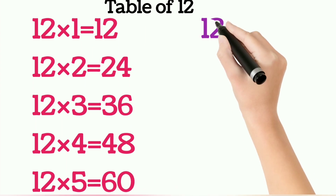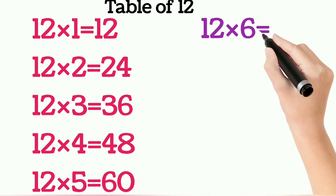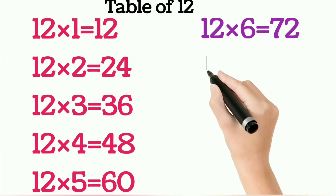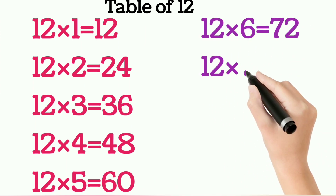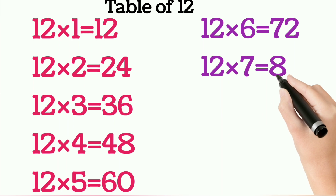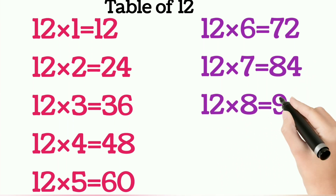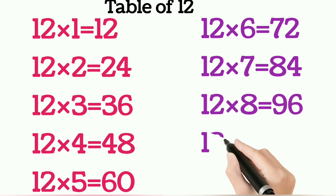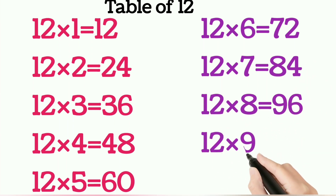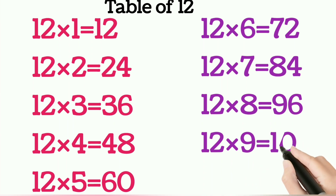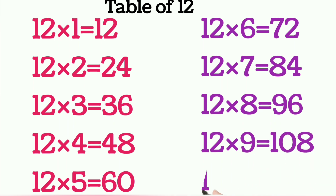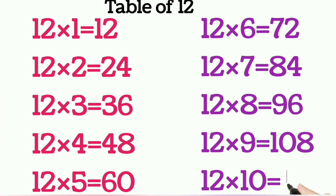Twelve sixes are seventy-two, twelve sevens are eighty-four, twelve eights are ninety-six, twelve nines are one hundred eight, twelve tens are one hundred twenty.